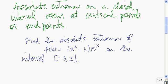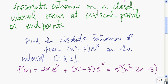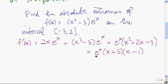To find critical points, we need to find the derivative of the function. Using the product rule, we have the derivative of the first piece times the second piece, plus the first piece times the derivative of the second piece. Then we clean this up to find where it's either 0 or undefined, so we factor out an e to the x, and then factor this quadratic. We get that our derivative is e to the x times (x plus 3) times (x minus 1).